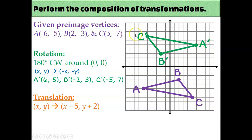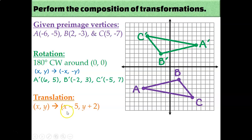So now I have triangle A'B'C', and this is the triangle that I'm going to translate using this rule. I'm not going to translate the purple one — I already did something to the purple one; it became the green one. I'm going to translate the green triangle to become the orange triangle, which will be A''B''C''. Remember that to perform a translation, you can either count from your pre-image coordinate according to the rule — go 5 to the left and 2 up and put a point — or you can subtract 5 from the x-coordinates and add 2 to the y-coordinates to get to your final answer.